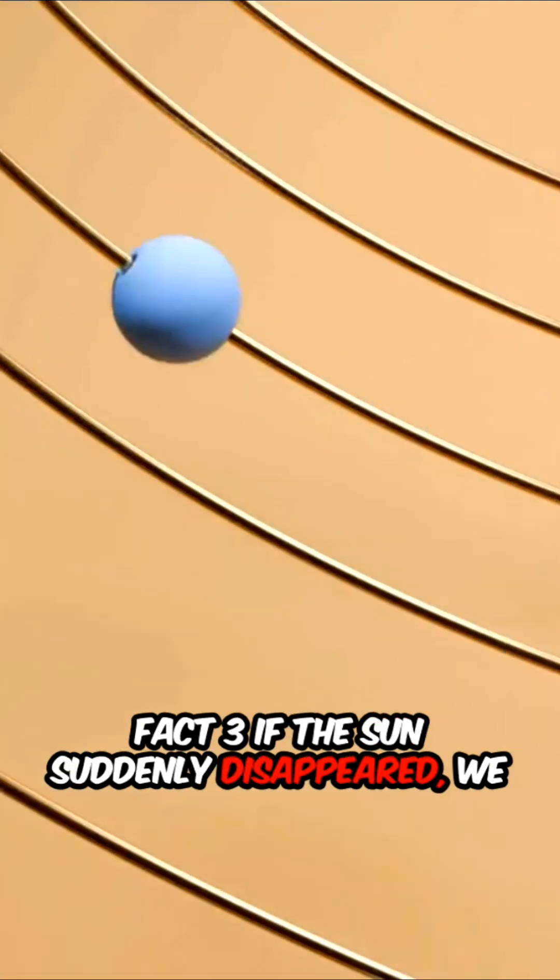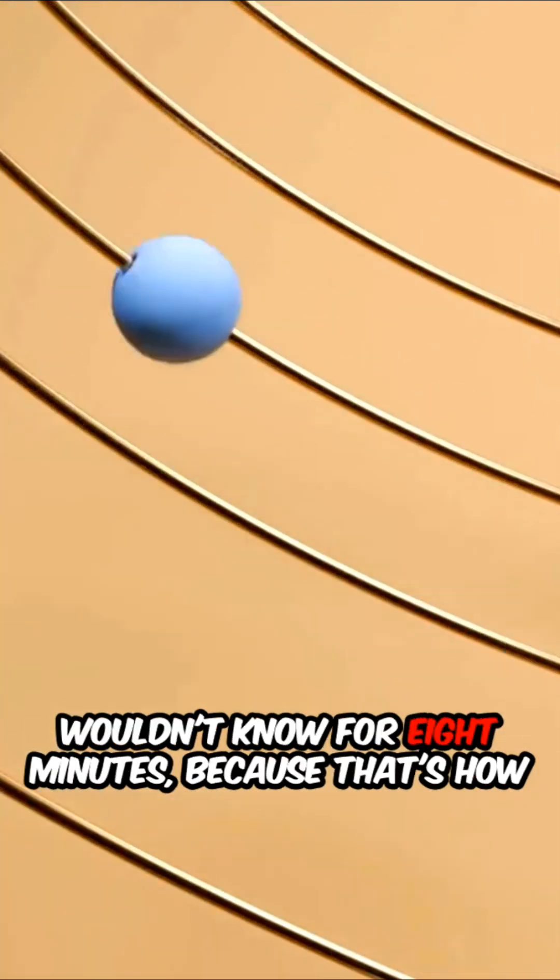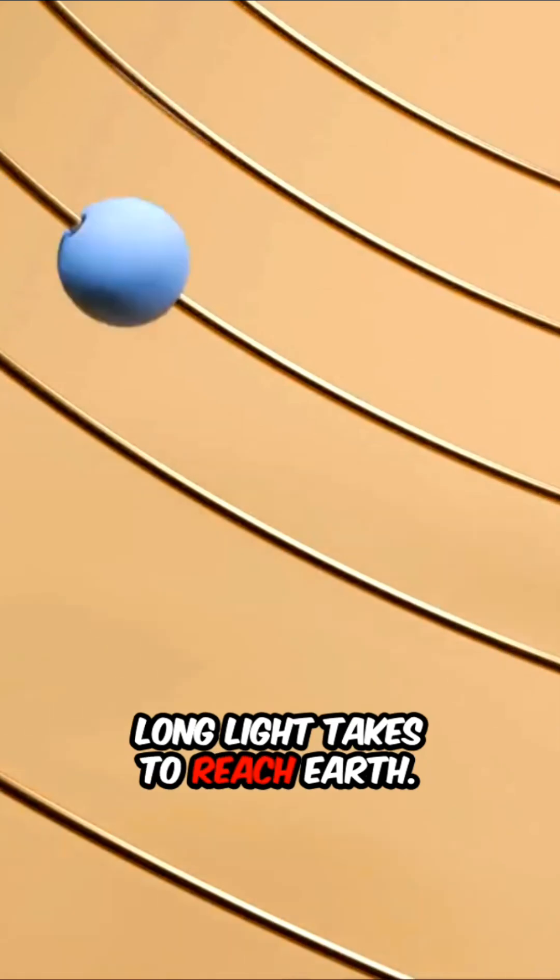Fact number three. If the sun suddenly disappeared, we wouldn't know for eight minutes, because that's how long light takes to reach Earth.